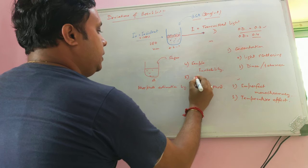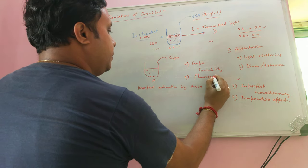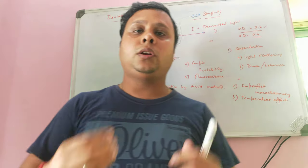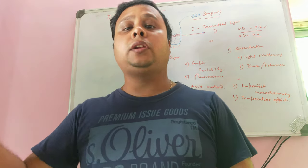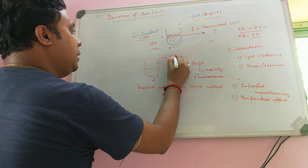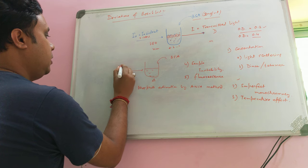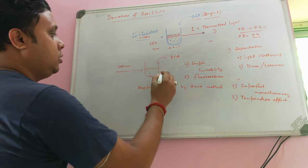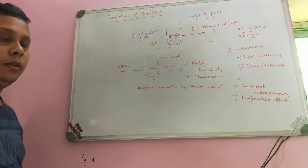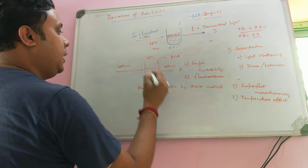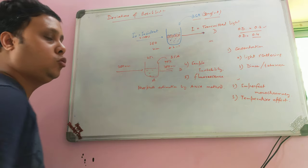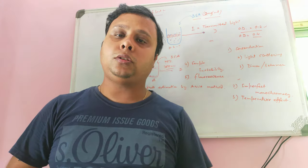The fifth deviation is fluorescence. Fluorescence is a phenomenon where a molecule, after receiving radiation, emits light of a longer wavelength. If we transfer 280 nm incident light to a BSA sample, the detector should receive only the 280 nm transmitted light. If the sample absorbs 25% of the light, the transmitted light will be 75% at 280 nm.